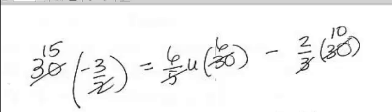Now, because we chose the LCD so well, everything is going to be integers on the next step. Okay, here's where you see it. Negative 45 equals 36 U subtract 20.